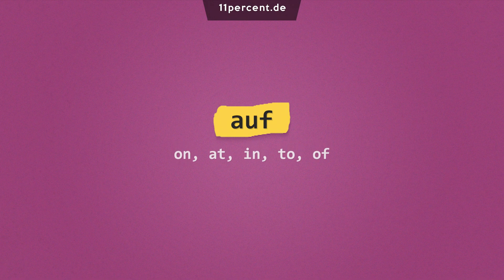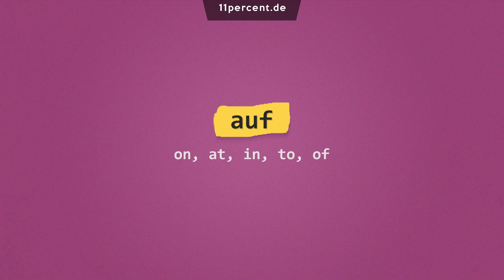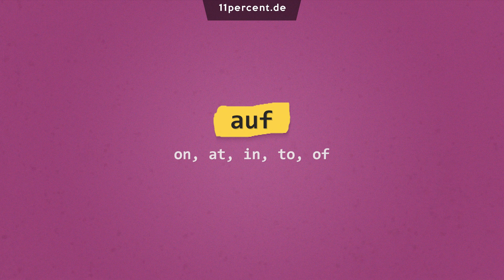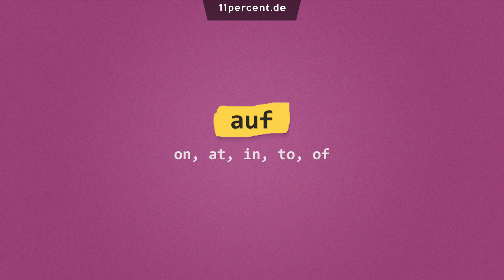Auf is another one of those very short words with nearly a thousand meanings — well, okay, maybe not exactly thousands, but there sure are a lot. Auf is a preposition with quite a lot of uses. Among others, it means on, at, in, to, and off. Keep watching to learn more.